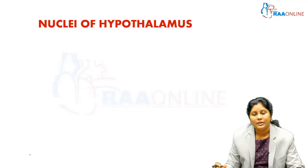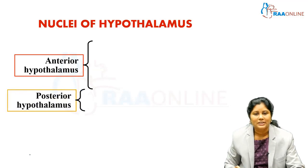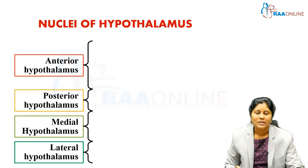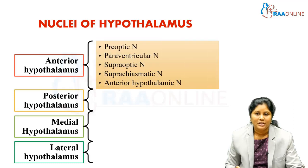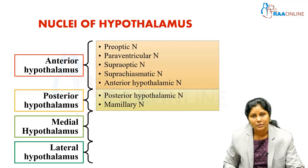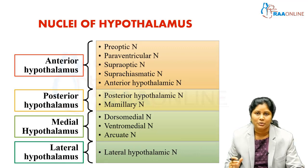The hypothalamus is a group — a cluster — of nuclei. They are classified as the anterior hypothalamic group, posterior hypothalamic group, medial group, and lateral hypothalamic group. The anterior group contains 5 nuclei: preoptic, paraventricular, supraoptic, suprachiasmatic, and anterior hypothalamic nuclei. The posterior group has the posterior hypothalamic area and mammillary nucleus. The medial group has dorsomedial, ventromedial, and arcuate nuclei. The lateral group has the lateral hypothalamic nuclei.